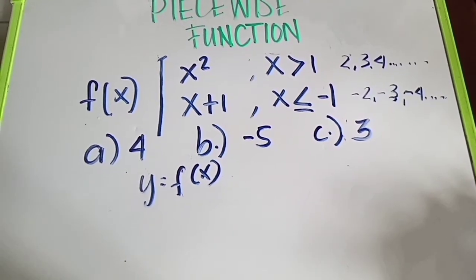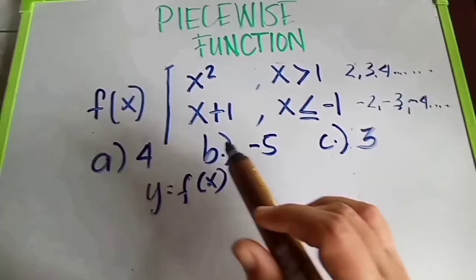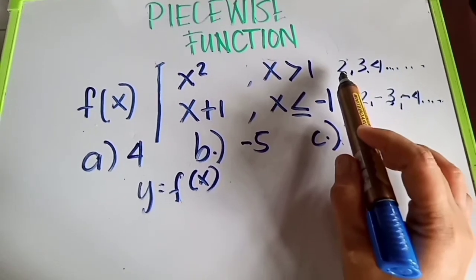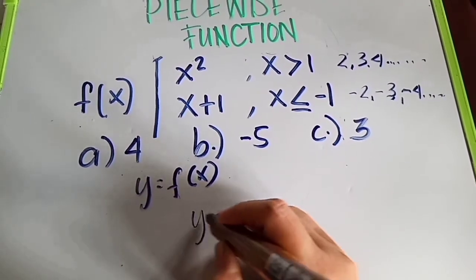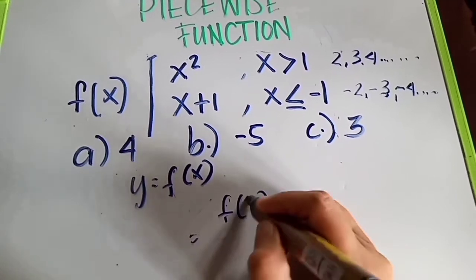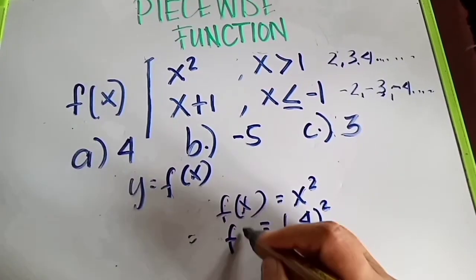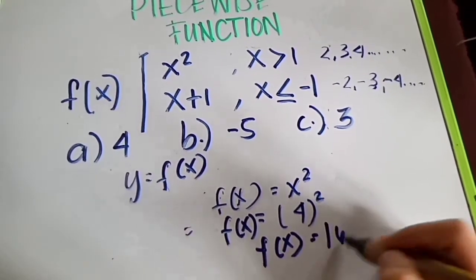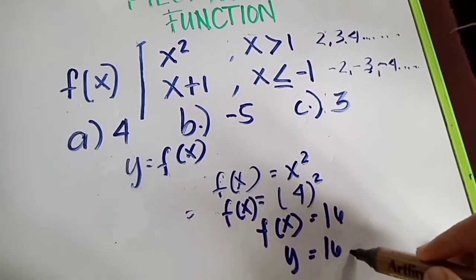So first, let's identify that the given is letter A, which is 4. Since x is greater than 1, and 4 belongs to that group — 2, 3, 4 — we substitute into f of x equals x squared. So f of x equals 4 squared, which equals 16. So the answer for letter A is y equals 16.